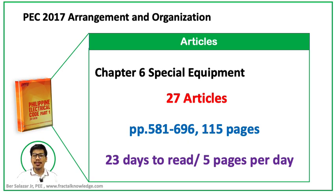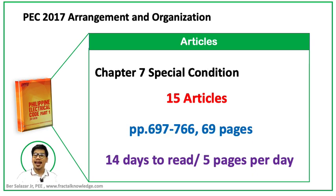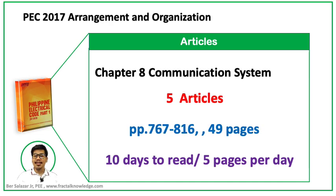Chapter 6 is dedicated to special equipment: 27 articles, pages 581 to 696 — almost 115 pages, taking 23 days at 5 pages per day. Chapter 7 is dedicated to special conditions: 15 articles, pages 697 to 766 — almost 69 pages, taking 14 days. Chapter 8 is dedicated to communication systems: 5 articles, pages 767 to 816 — almost 49 pages, taking 10 days at 5 pages per day.